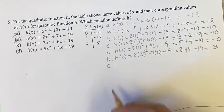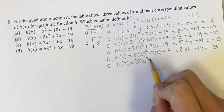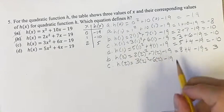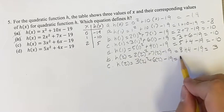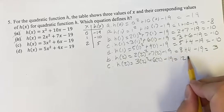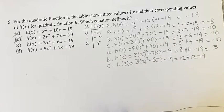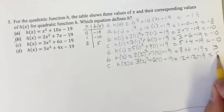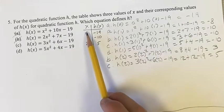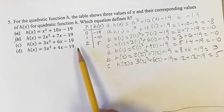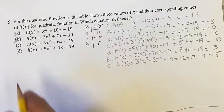Moving on to c. h(2) equals 3(2²) + 6(2) - 19. 2² is 4, times 3 is 12, plus 6 times 2 is 12, minus 19. 12 + 12 = 24, minus 19 = 5. So we've seen that c works for x = 0, x = 1, and x = 2, meaning it gives us these three values. So we're pretty certain that c is going to be our answer.